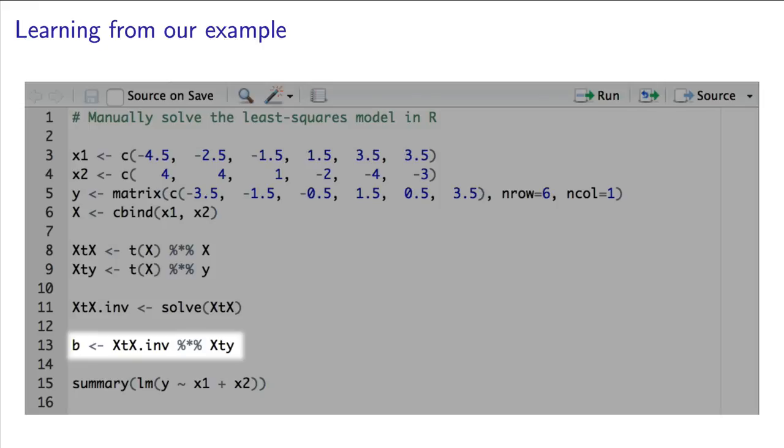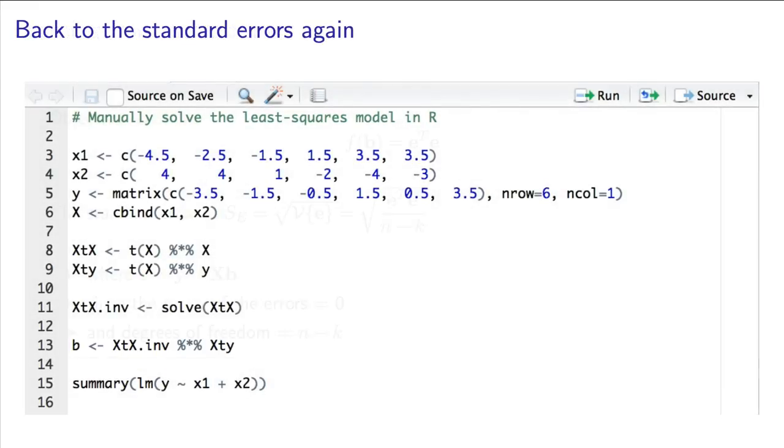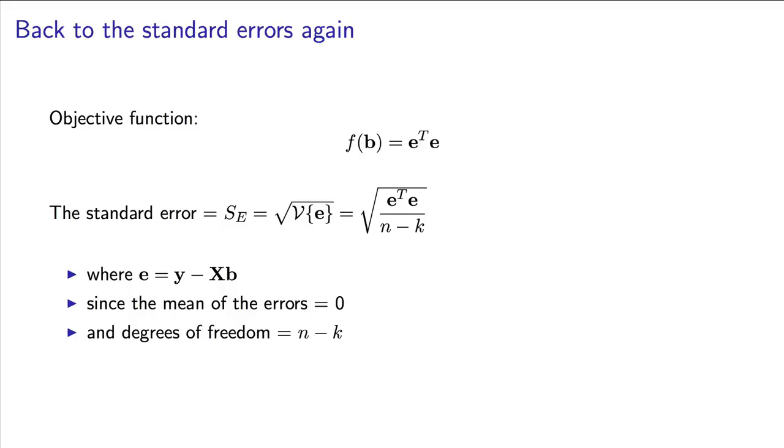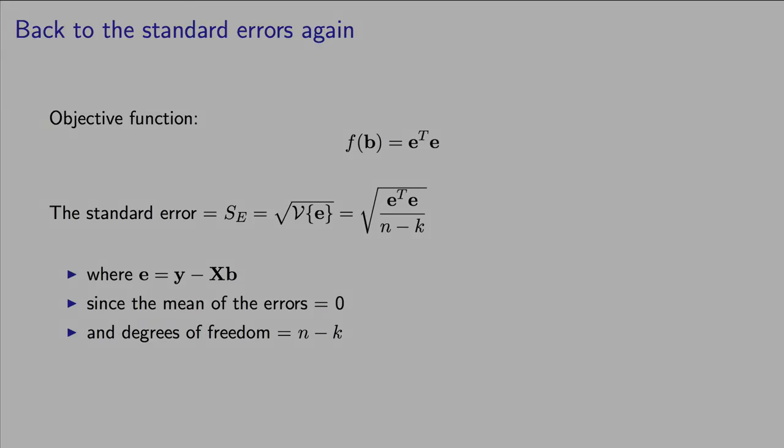There is one last entry we need to go calculate, and that is the standard error. Standard error, you will recall, is equal to the objective function of the least squares model, divided by n minus k, and then we take the square root. So in other words, standard error is calculated as E transpose E, divided by n minus k, and then we take the square root. Once we have that error vector, it is easy to go calculate the standard error. In the next video, we're going to look at the important topic of interpreting the multiple linear regression coefficients.